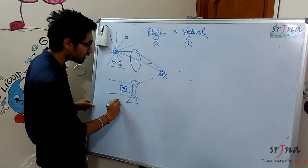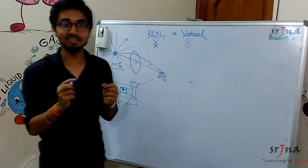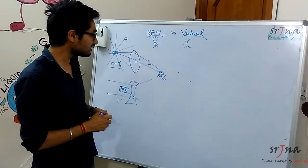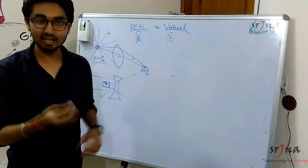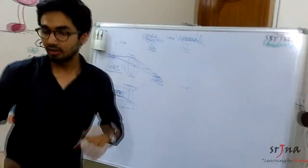So that's why we say this is a virtual image means it does not exist in real life. So we'll prove this practically with the help of a ray diagram and we'll assume these laser lights as particular rays. So let's see.